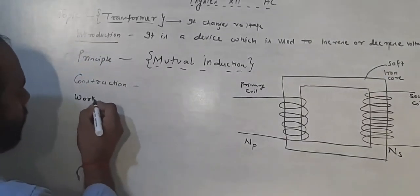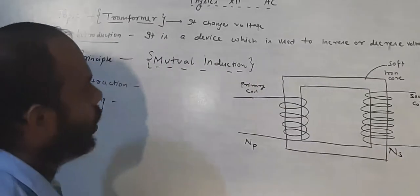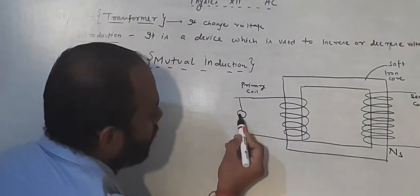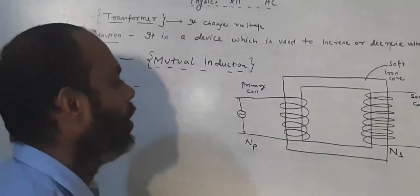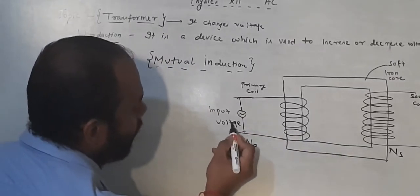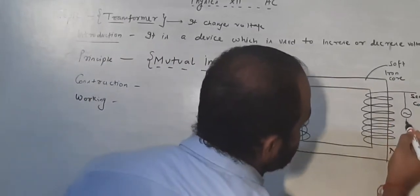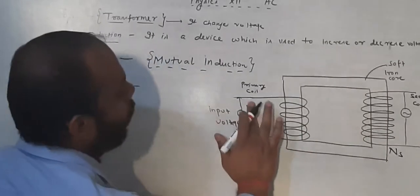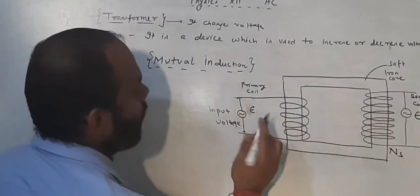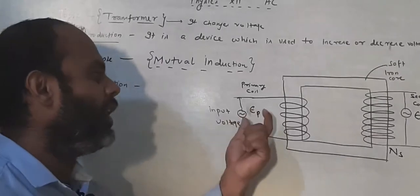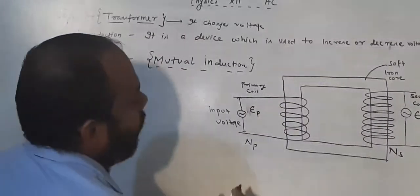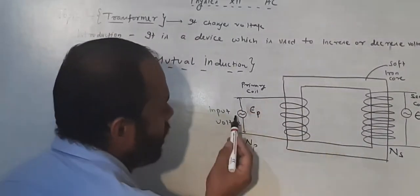Now what is the working? If I apply a voltage in the primary coil, that is the input voltage — let's call it EP — then I will get an output voltage, which we can call ES. In some books you can get EP for input and ES for output. When the current in this coil changes — and it is AC current — then working begins.